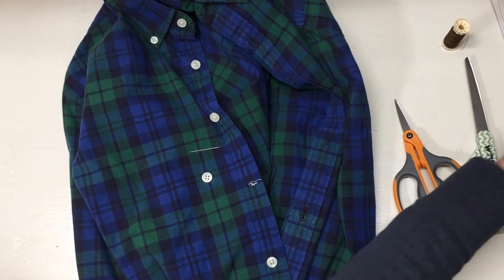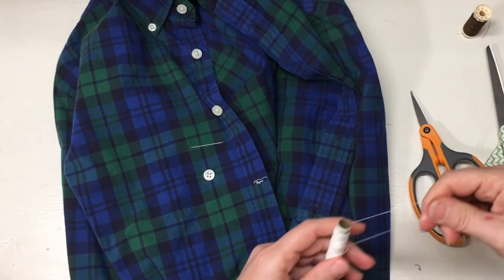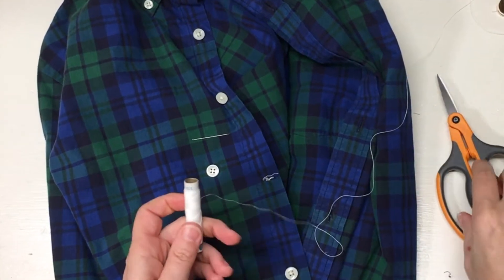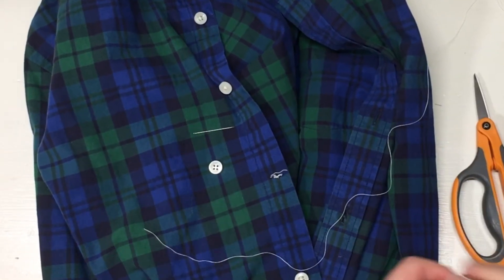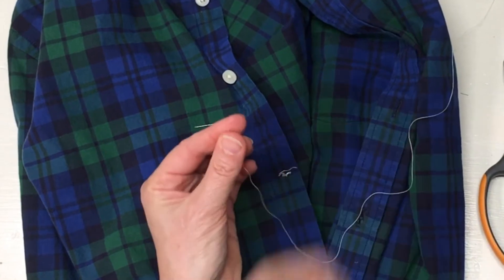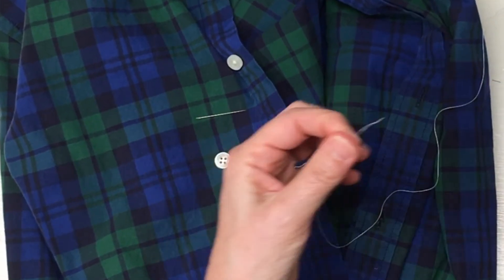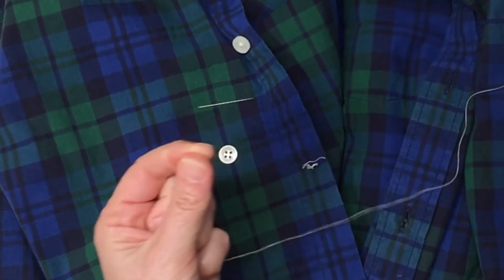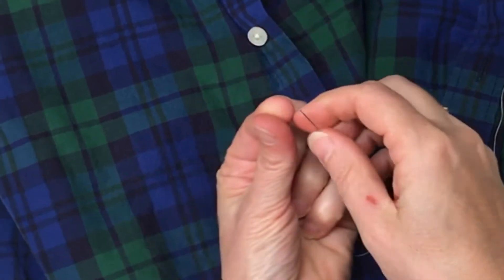See that little dangly thread there? Leave it alone. Now I'm gonna show you some stuff about how to thread your needle. I know you think it's rocket surgery, but it's not. Yes, you are gonna spit on the thread. It helps. It holds all the little fibers together and makes it just a little stiffer.